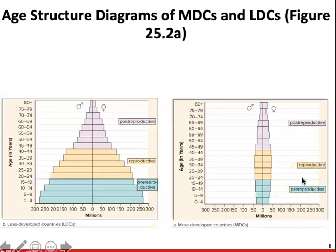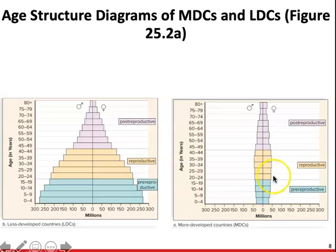In more developed countries, age structure diagrams are shaped more evenly, where individuals in the reproductive stage are having the same number or fewer children than themselves — couples having one or two children, or choosing not to have children at all. We're seeing fewer individuals in the pre-reproductive stage than those of reproducing age. A population with this age structure shape will grow very slowly or not at all.